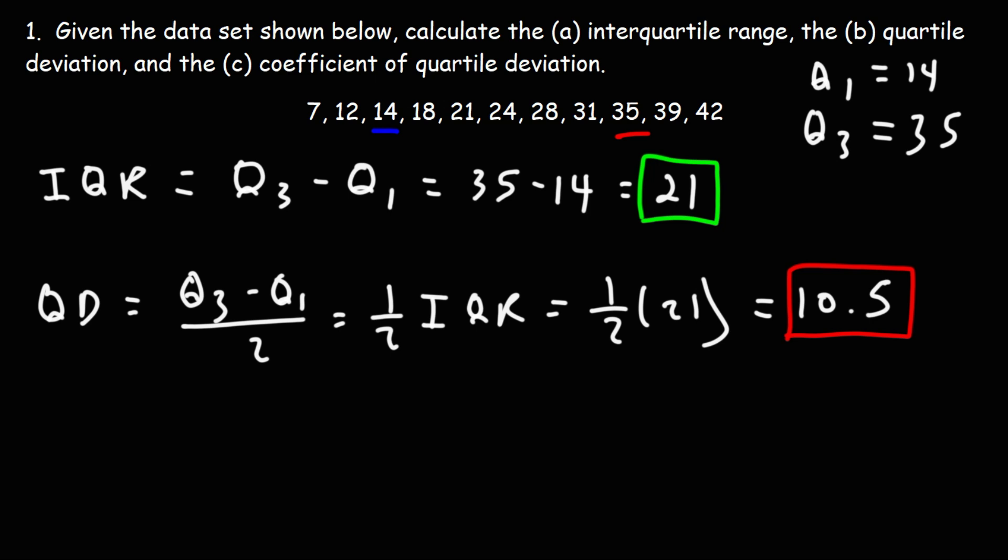Now, let's calculate the coefficient of quartile deviation in part C. Let's abbreviate that as CQD, coefficient of quartile deviation. And that's going to be Q3 minus Q1, which is the interquartile range, divided by Q3 plus Q1.